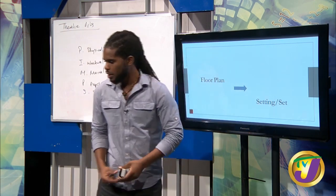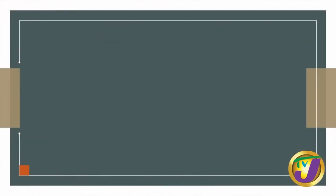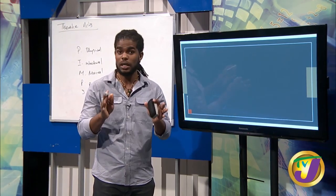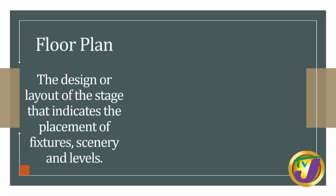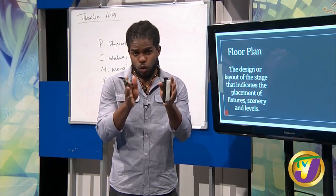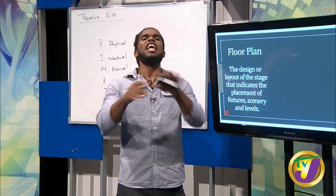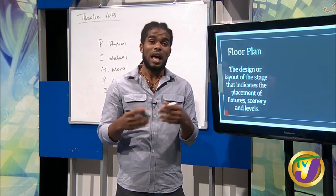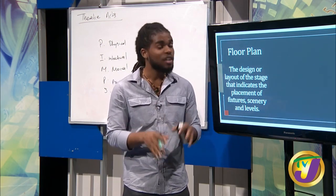The floor plan leads us to the set and setting. A floor plan is the design or layout of the stage that indicates the placement of fixtures, scenery, and levels. When you go to a play and look at the stage, everything you see is part of the set, and all of that came from the floor plan. I'm going to give you an idea of what a floor plan looks like.